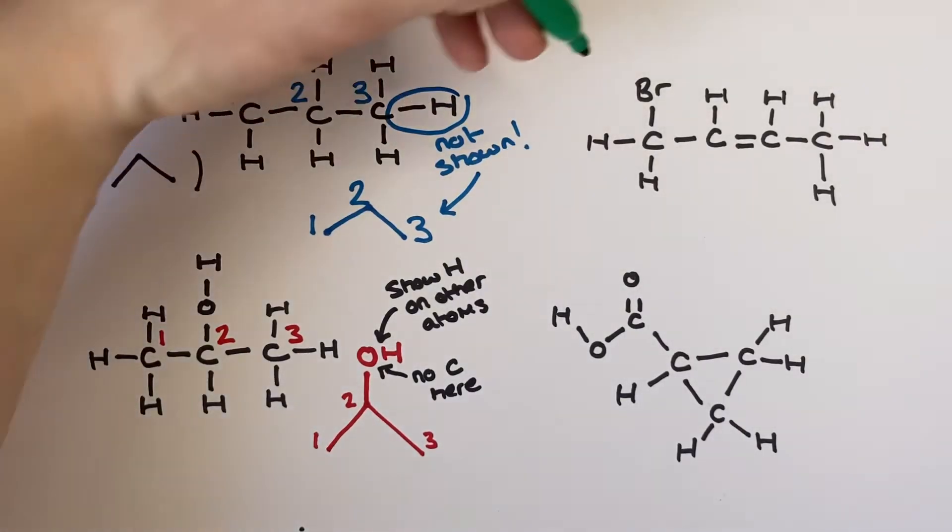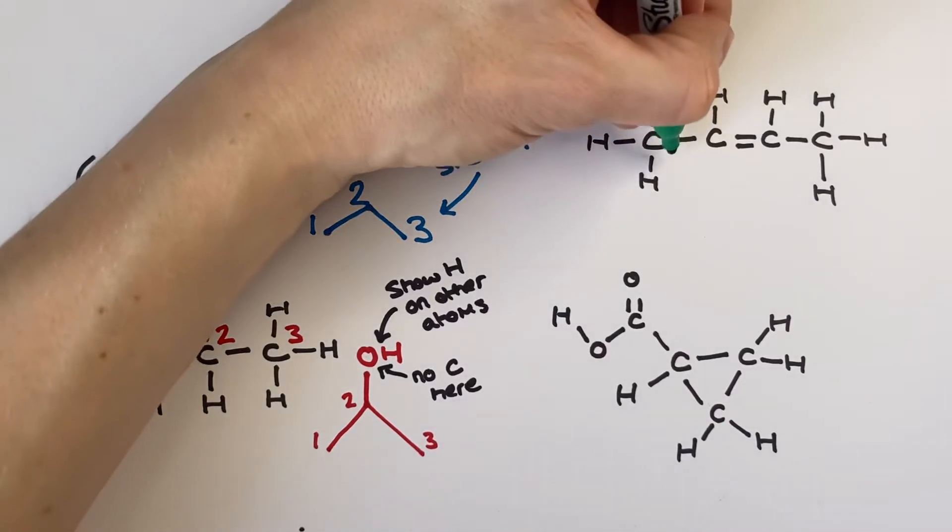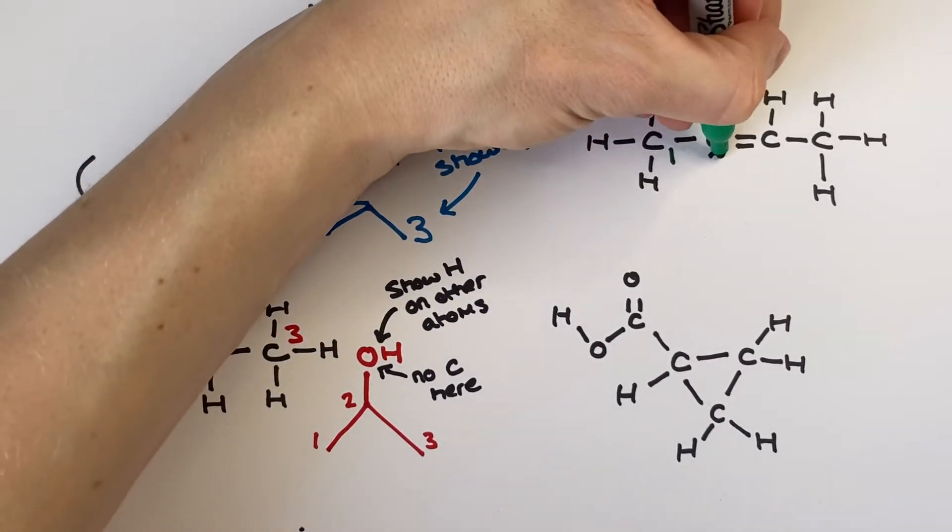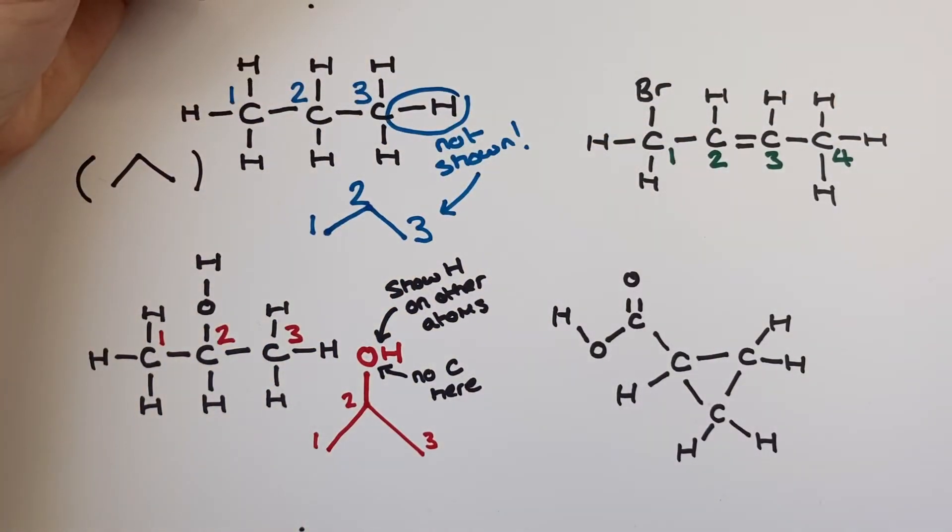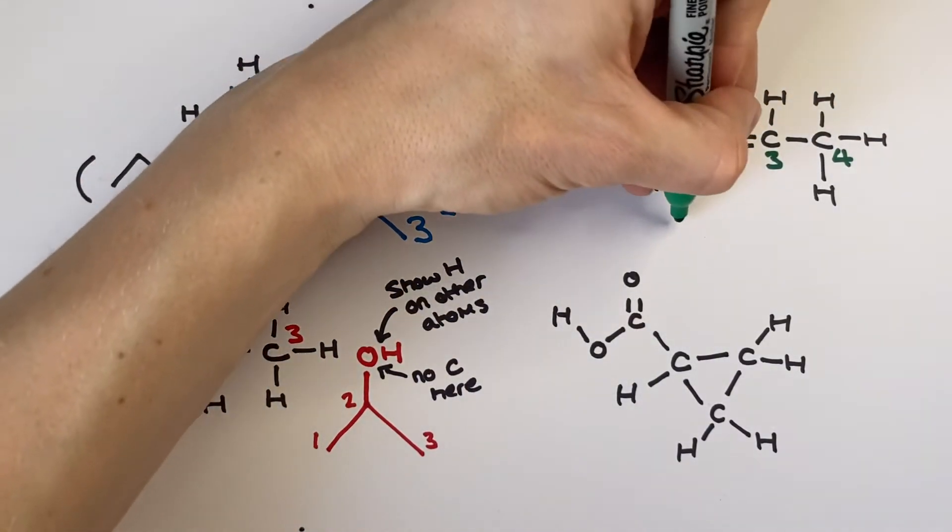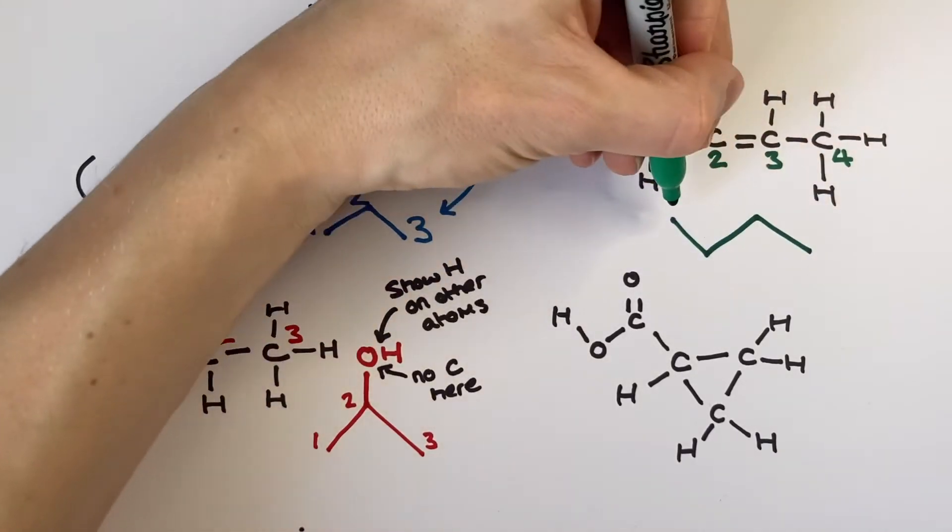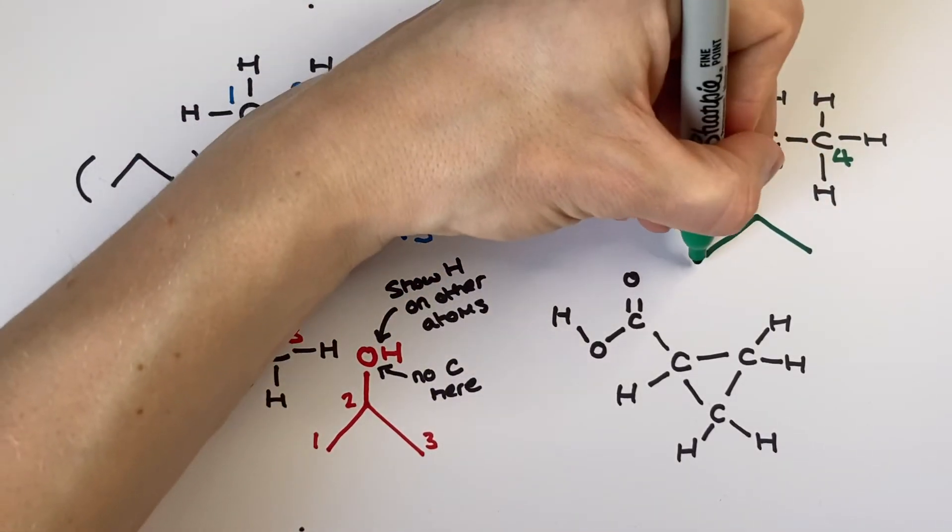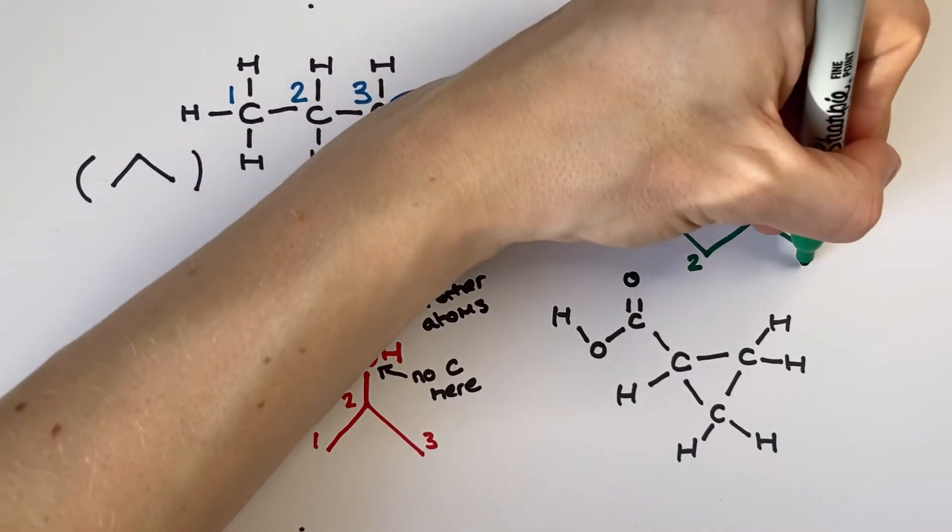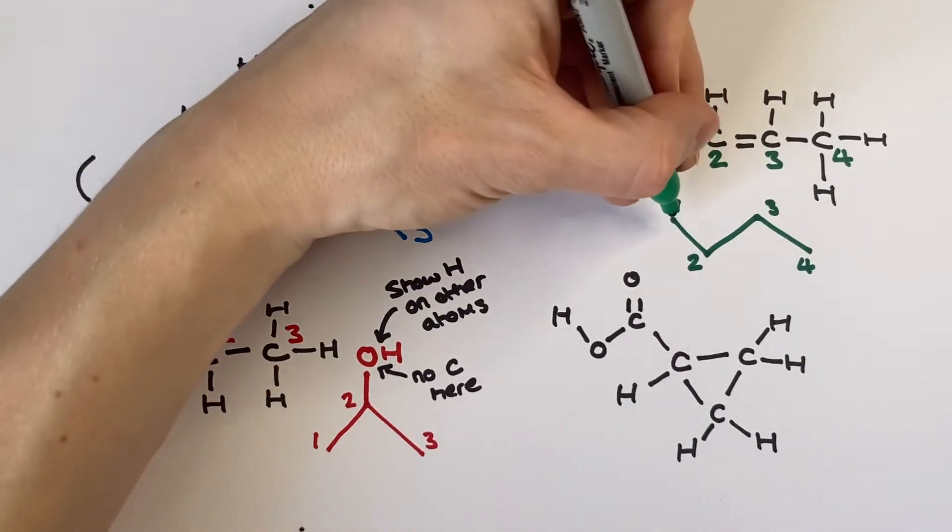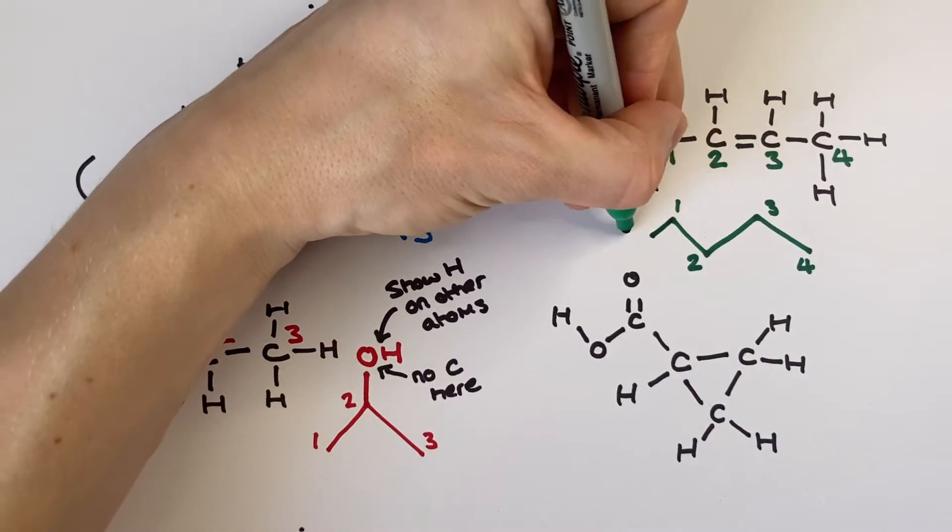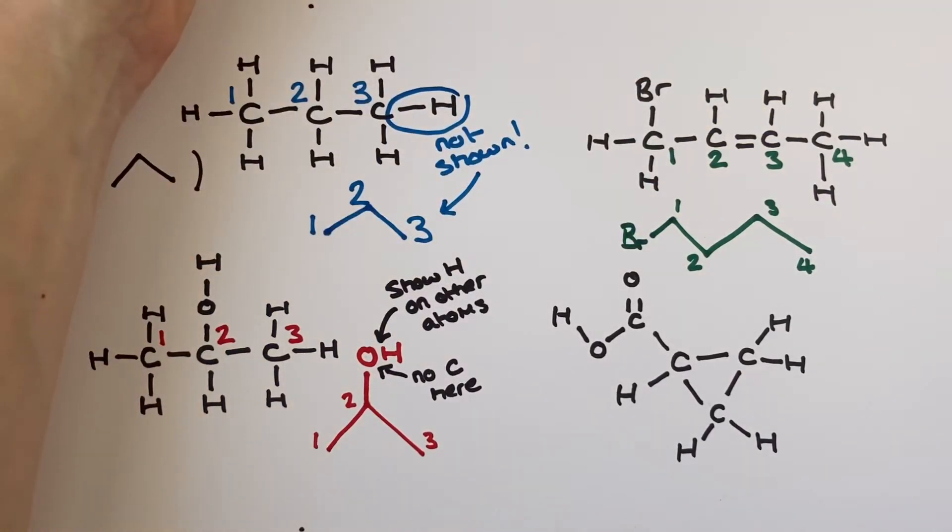So this next example is 1-bromo-but-2-ene. We're going to stick to my general rule that in order to draw skeletal every end of every line and every corner in the line represents a carbon atom. And so here to get started with are my 1-2-3-4 carbon atoms. And then I put everything else on. For example on carbon 1 I've got a bromine. So a line from carbon 1 straight to a bromine. I've not introduced any extra carbon atoms because I've got a bromine at the end of that line.